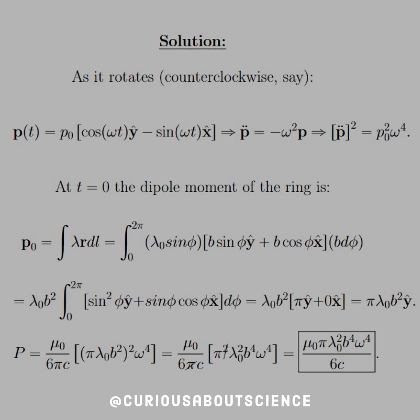And then, sine squared, we're just left with a π. So let it work itself through. You see we get π λ₀ b² in the ŷ direction, which kind of looks like a magnetic moment with the area involved.